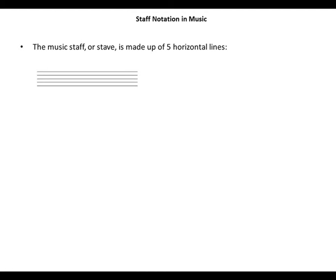The music staff is made up of five horizontal lines. Remember that when we count, we start counting from the bottom line upward to the top line, so the movement is like this.